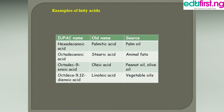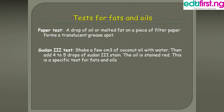Let's look at some examples of fatty acids used to produce oils when reacted with propane-1,2,3-triol. Hexadecanoic acid (palmitic acid) comes from palm oil. Octadecanoic acid (stearic acid) comes from animal fats. Octadec-9-enoic acid (oleic acid) is found in peanut oil and olive oil, while another example is sourced from vegetable oil.